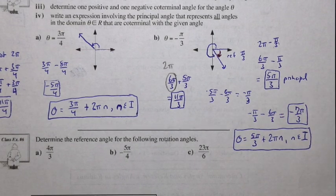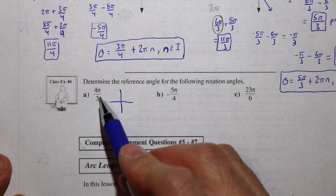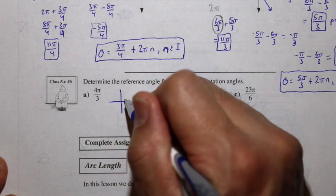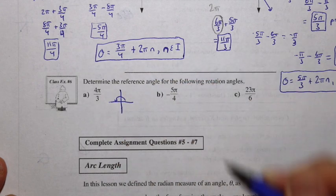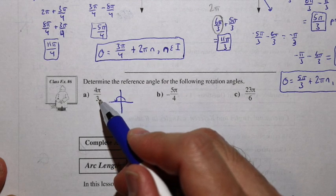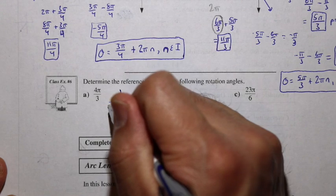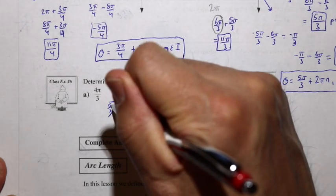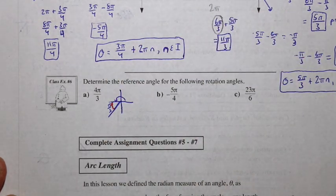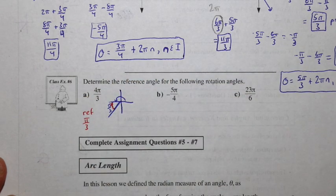Let's look at class example 6 — determining the reference angle for given rotation angles. For part a, 4π/3: going by thirds, 3π/3 is one full π, a semicircle. Then it's π/3 more than a full π, adding another π/3 into quadrant 3. That π/3 is the smallest angle to the x-axis, so the reference angle is π/3.